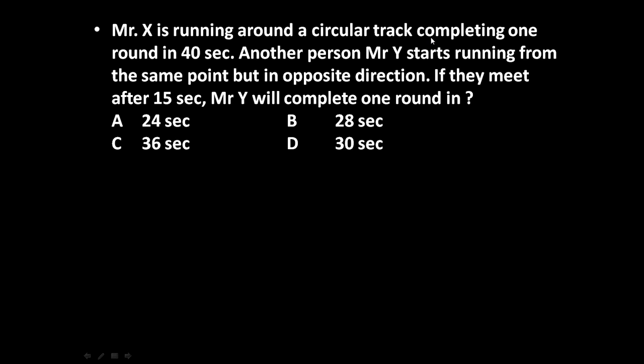Mr. X is running around a circular track completing one round in 40 seconds. Another person Mr. Y starts running from the same point but in opposite direction. If they meet after 15 seconds, Mr. Y will complete one round in how many seconds?